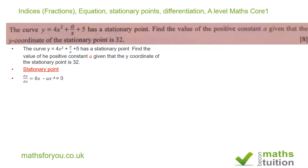We need to differentiate y with respect to x. That gives us dy/dx = 8x minus ax to the power of minus two. The minus two comes from x to the power of minus one, and that's where all the negative values have come from.